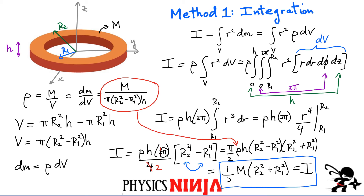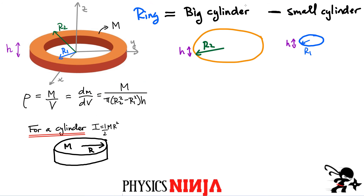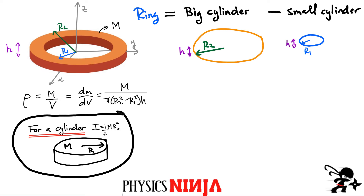Now I'm going to show you the second method: how to deal with the moment of inertia of an object with a hole, because that's all this ring is — a cylinder with a hole inside. The moment of inertia of a solid cylinder is simply ½·m·r², where m is the total mass and r is the radius.